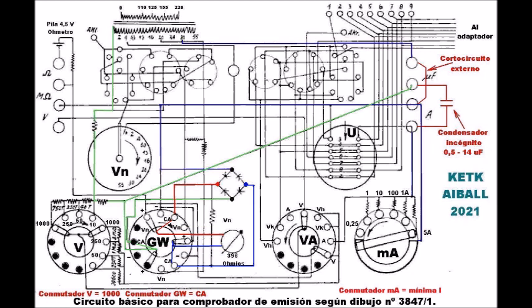Ahora tenemos el otro circuito de medida de capacidades: podemos medir desde 0,5 microfaradios a 14 microfaradios como máximo. Este rango es mayor que el anterior, pero no viene bien explicado en el manual, por lo que hay que investigar los diferentes sub-rangos. El condensador incógnito se conecta entre los terminales segundo y cuarto de la derecha, y los terminales primero y tercero se ponen en cortocircuito.